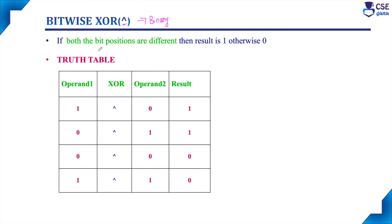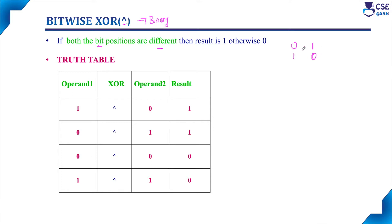Bitwise exclusive OR is: if both the bit positions are different — that is, if one bit position value is zero and the other is one, or the first bit position value is one and the second bit position value is zero — the result will be one. If both the bit positions are the same, that is, both bit values are zero or both are one, the result will be zero.